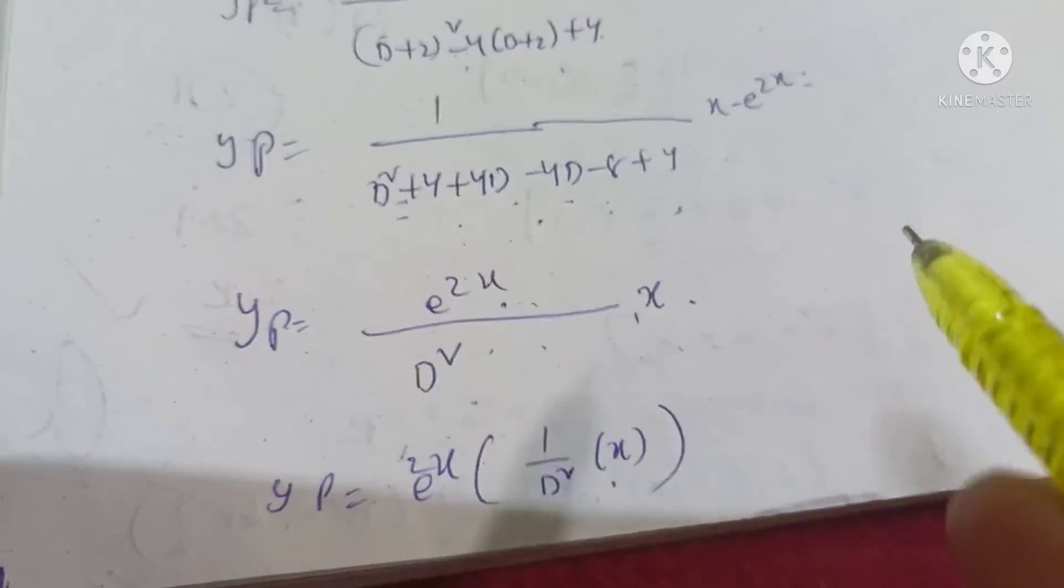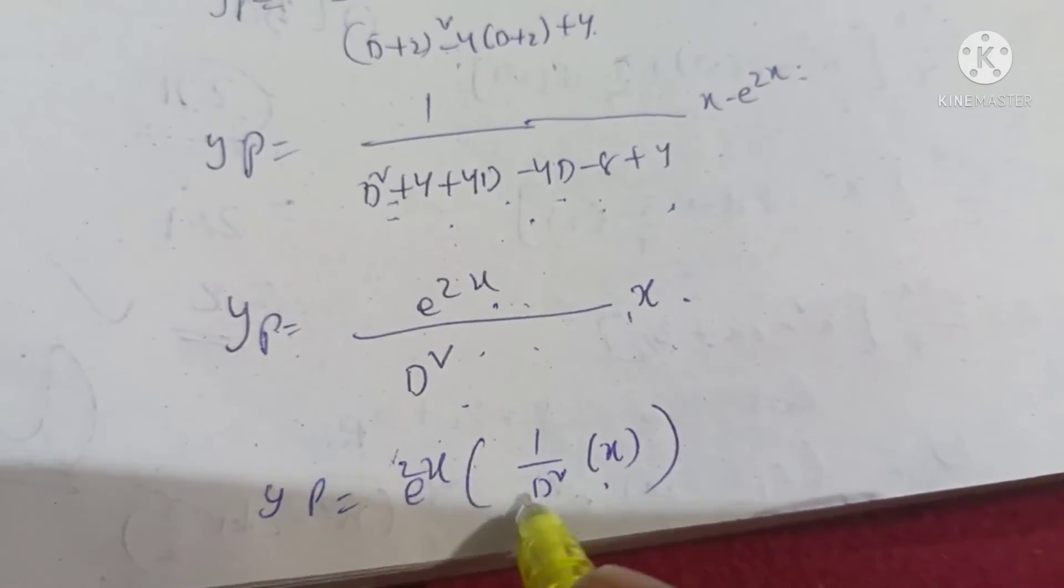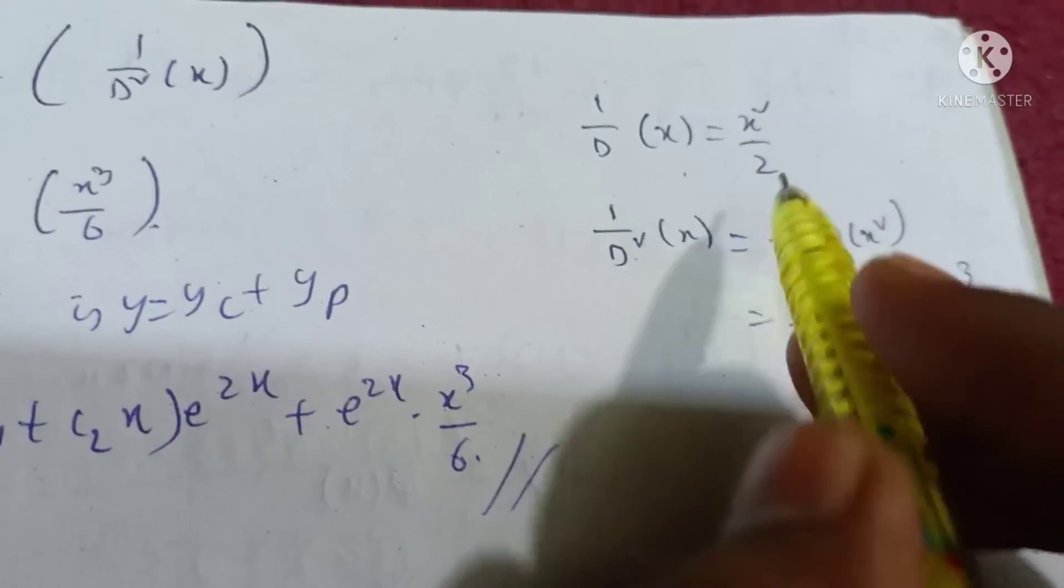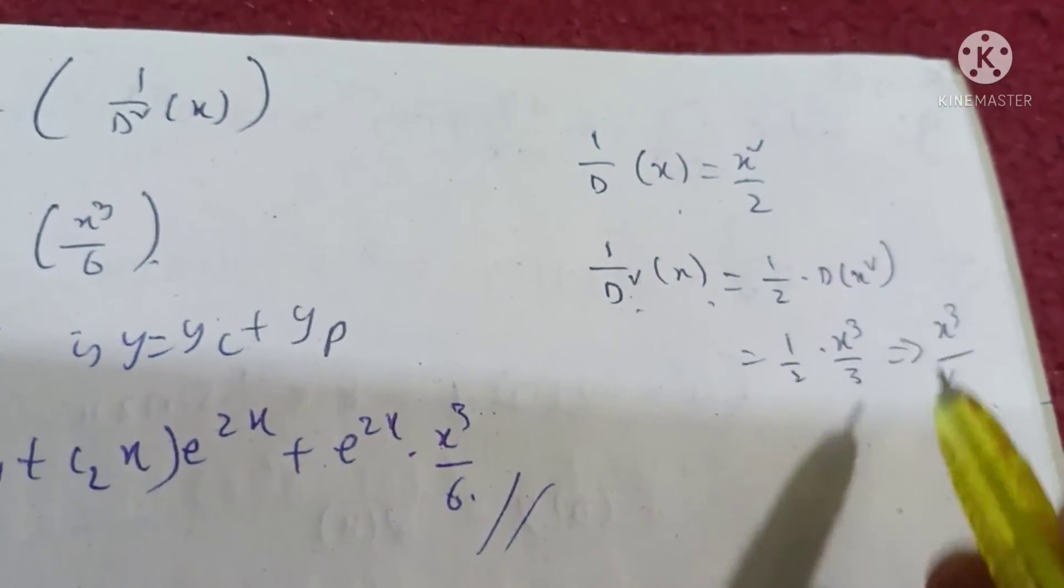x will do double integration. 1 by d is integration. Single integration is equal to x square by 2. Double integration is equal to x cube by 6. That's right.